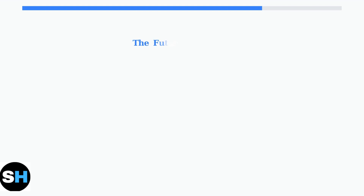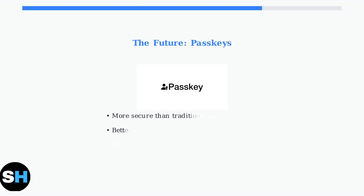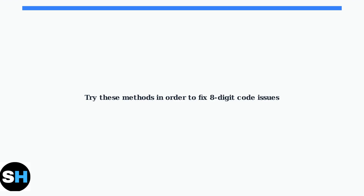Keep in mind that Microsoft is transitioning towards passkeys as a more secure alternative to traditional one-time codes. Passkeys offer enhanced security and a better user experience, representing the future of authentication. These three methods should resolve any issues with eight-digit codes in your Microsoft Authenticator app — try them in order until you achieve the standard six-digit code format for your accounts.